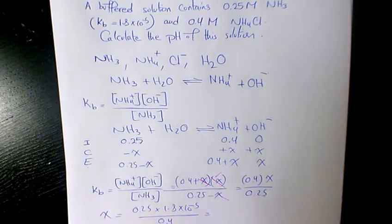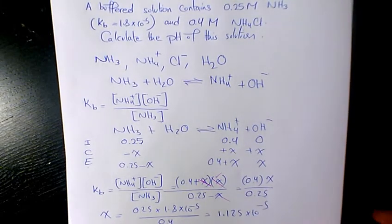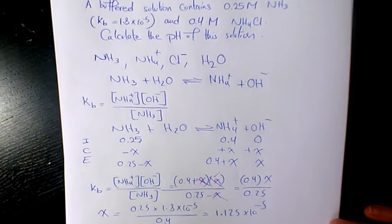That will be 0.25 times 1.8 times 10 to the power of negative 5 divided by 0.4, that will be 1.125 times 10 to the power of negative 5.